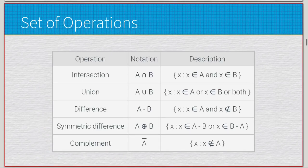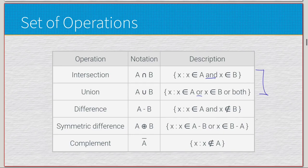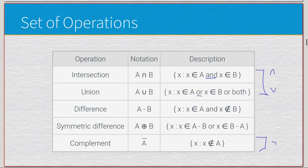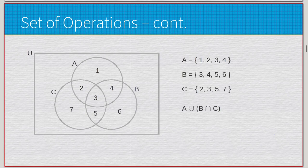So our set operations are intersection, union, difference, symmetric difference, and complement. Notably, intersection uses 'and,' union uses 'or,' and complement works like negation — these correspond one-to-one with propositional logic operations. Intersection is like conjunction, union is like disjunction, complement is like negation, and symmetric difference is like exclusive-or. They are essentially the same operations, just one happens in set logic and the other in propositional logic.